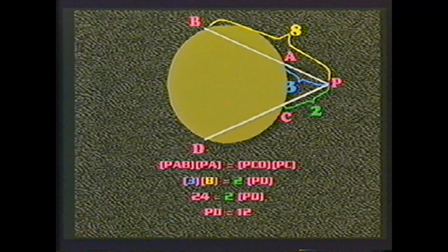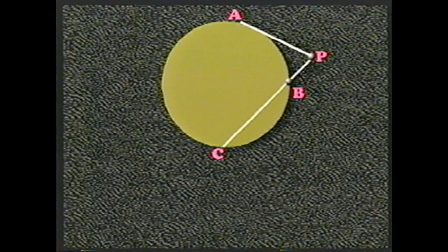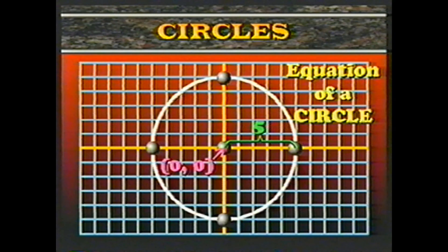There are also theorems about the lengths of secants. If two secants are drawn from a point outside a circle — in this figure, PAB and PCD — then the product of one secant and its external segment equals the product of the second secant and its external segment: PA × PB = PC × PD. Given PA = 3, PB = 8, and PC = 2: 3 × 8 = 2 × PD, so 24 = 2 × PD, giving PD = 12.